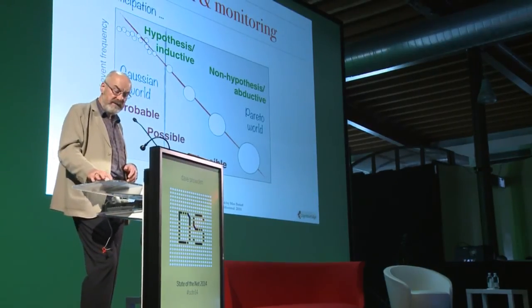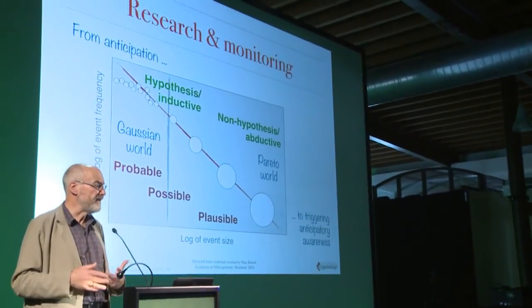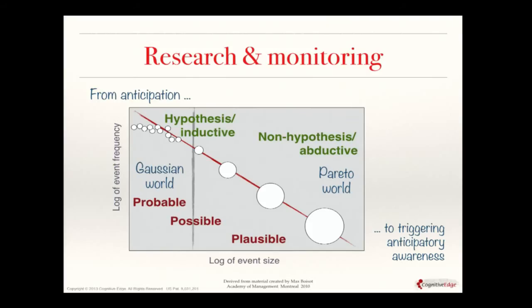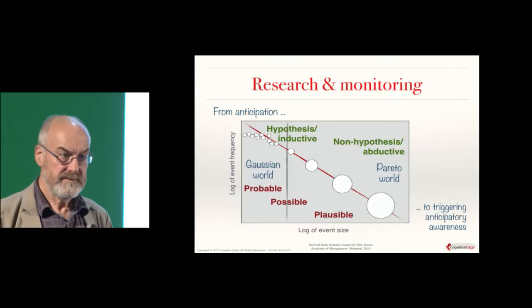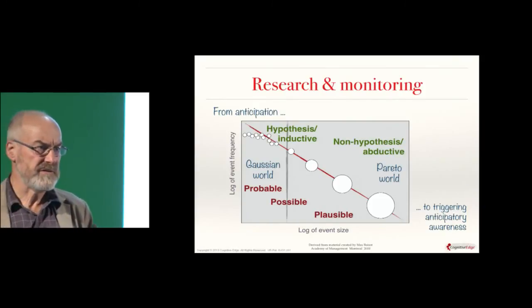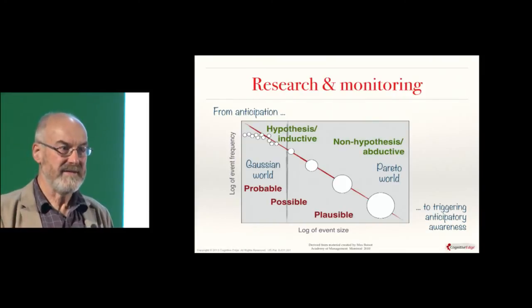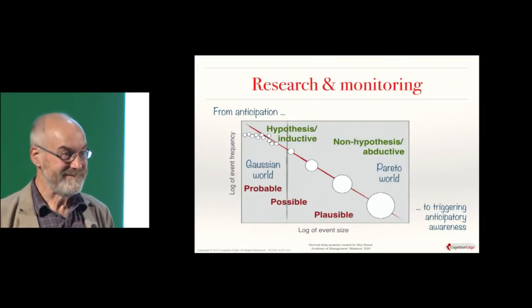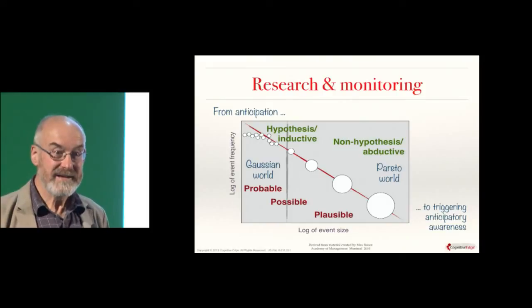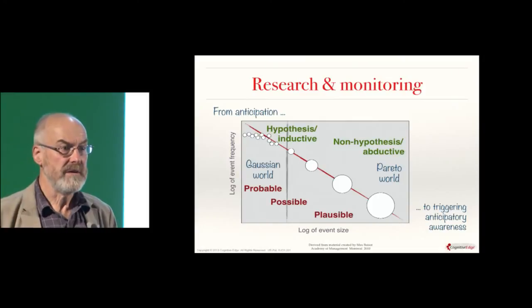The minute you construct a hypothesis, you limit what you see to that hypothesis being proved or disproved — so non-hypothesis-based research is key. We also switch from anticipation to triggering anticipatory awareness — the ability to know you need to look at something differently. Triggering human beings to a heightened state of alert when they need to pay more attention, remember the gorilla — if I can trigger an alert which says stop counting the balls, look at the whole picture — that's what I need to do. We're doing this on strategic surprise in military environments, social workers trying to work with kids who are going to be abused, premature discharge of patients from hospitals. You can't predict an adverse event, but you can predict the increased plausibility of an event to trigger a human being to a heightened state of response.